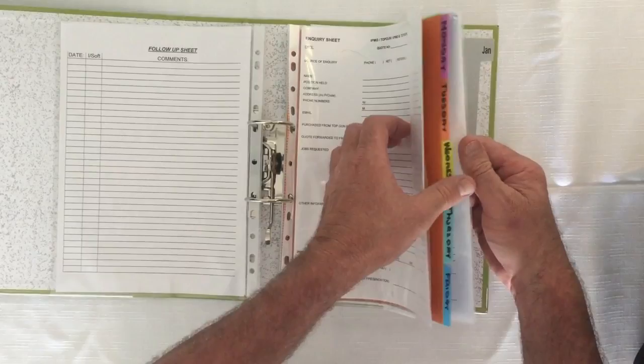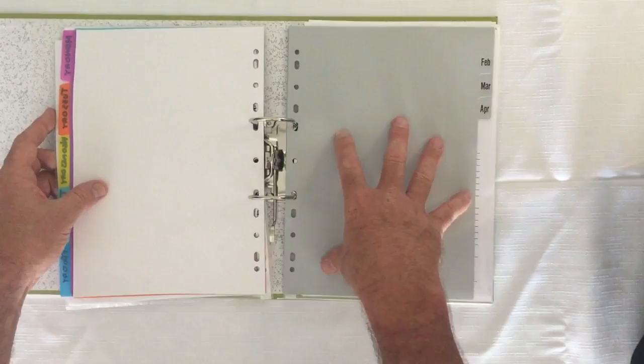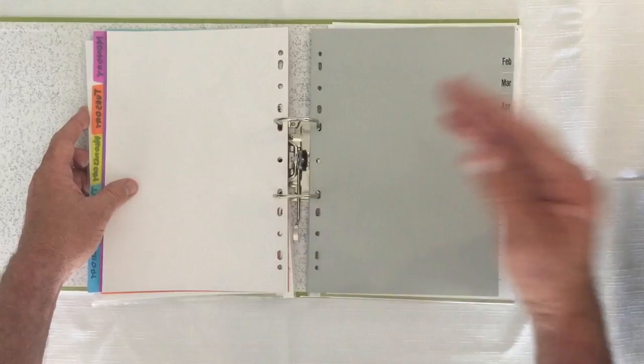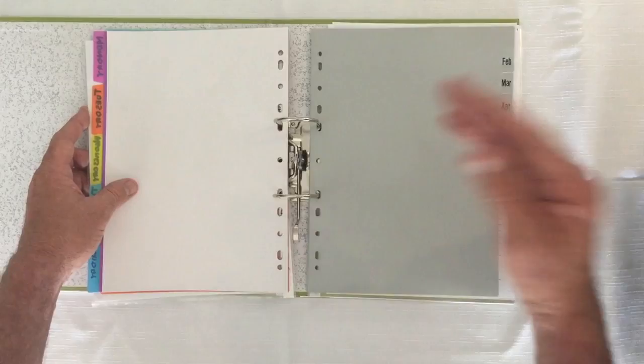At the end of January you'll open up and you'll have all your leads you've got to focus on in February. Then each month as you take the February leads out, you move February to the back. So what you're working on is the next month is there and the next day is there.